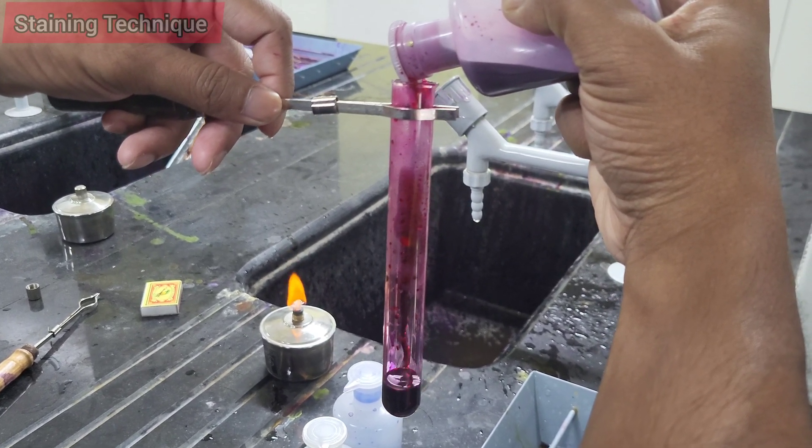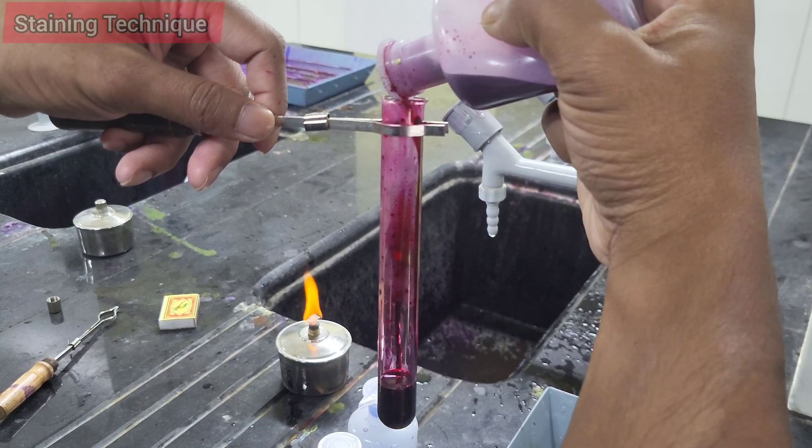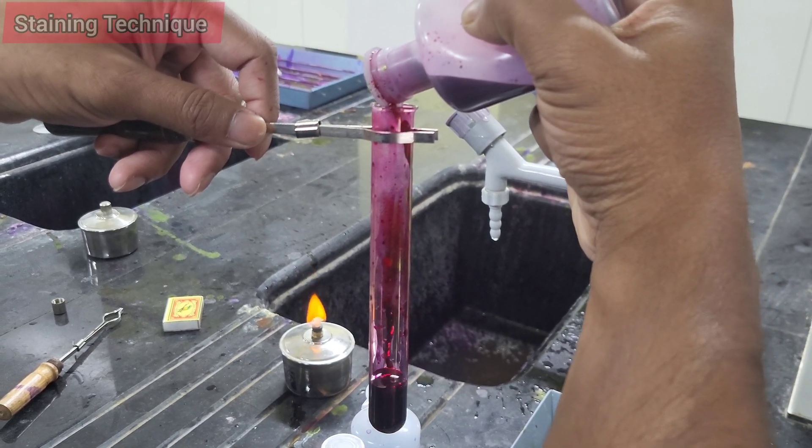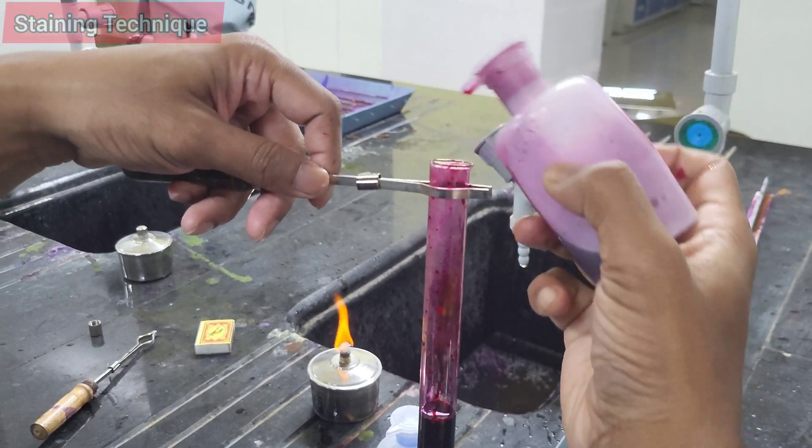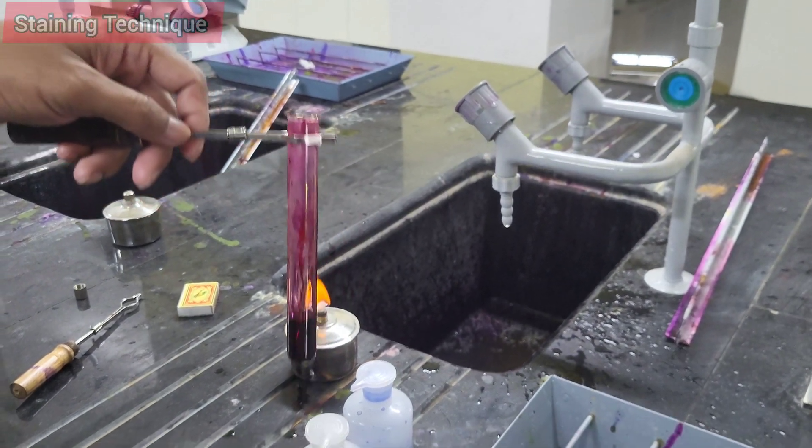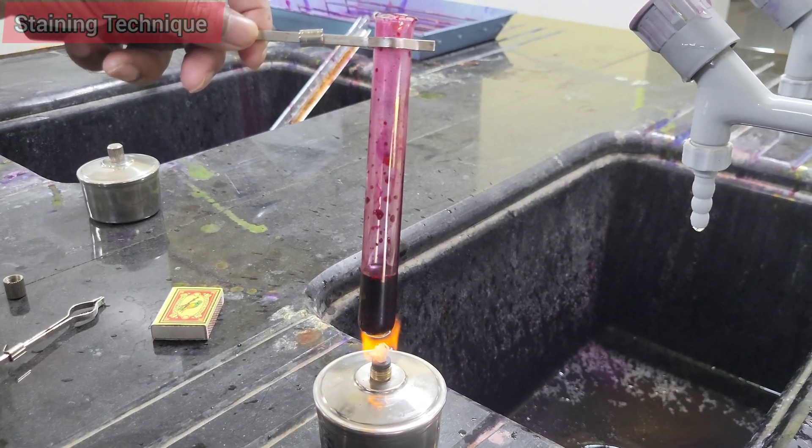What is the principle of Ziehl staining? Acid-fast organisms such as Mycobacterium tuberculosis have mycolic acid in their cell wall which retains the carbolfuchsin dye despite decolorization with acid alcohol. Why Ziehl staining is not suitable for all bacteria? Most bacteria lack high lipid content required for acid-fastness.